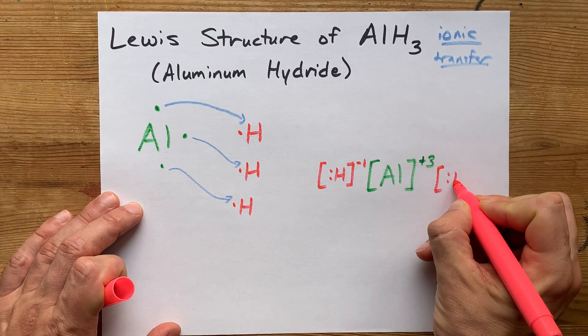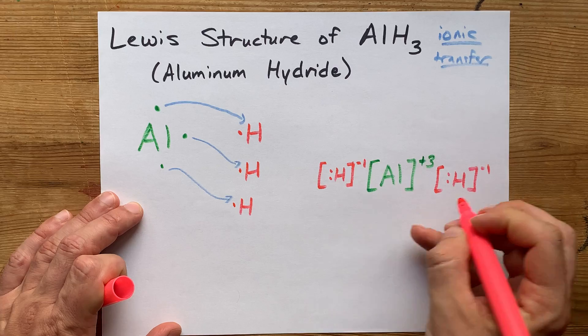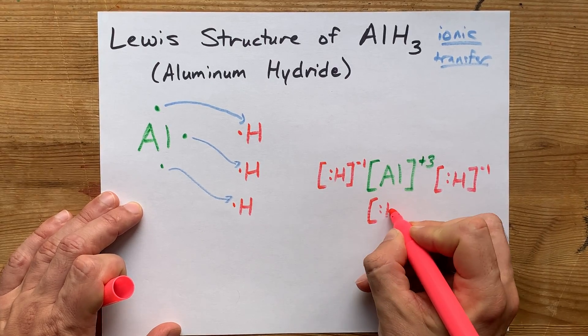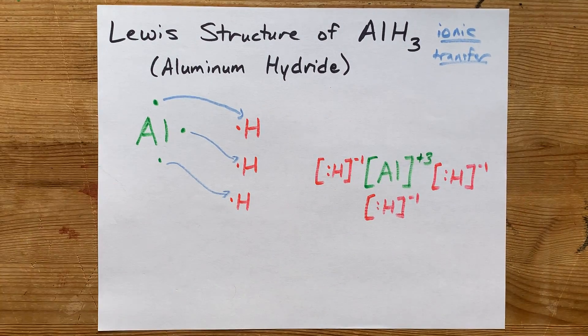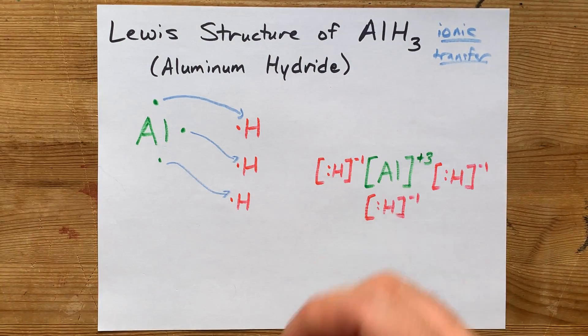Now, you're going to want to draw that three times to show that there are three of them. Your complete Lewis structure for aluminum hydride is here. Congratulations, and best of luck.